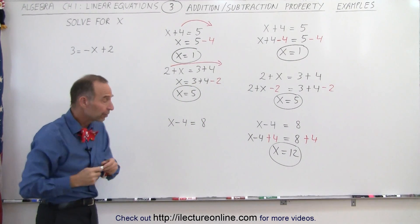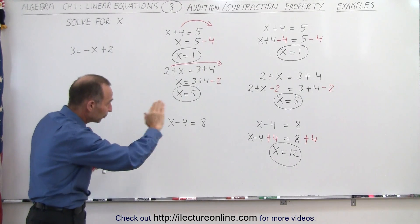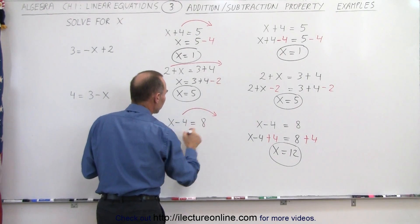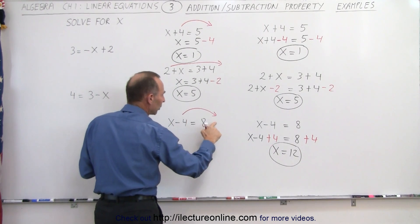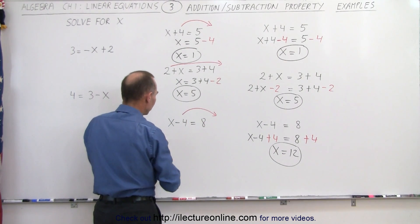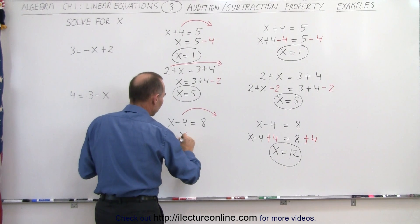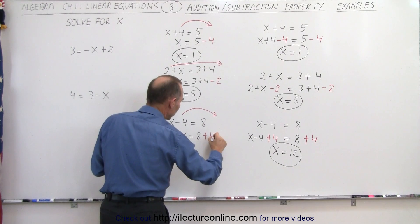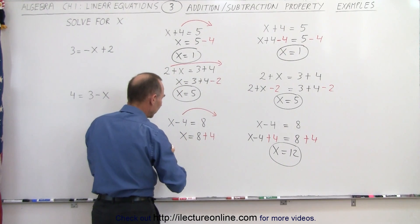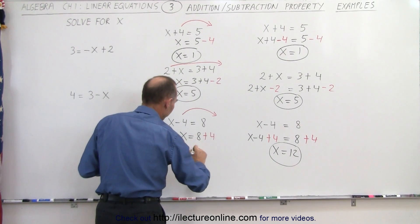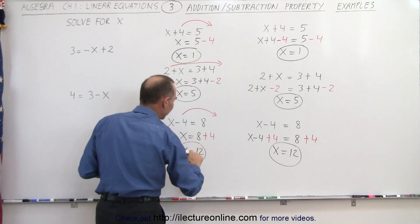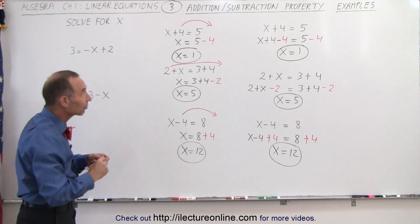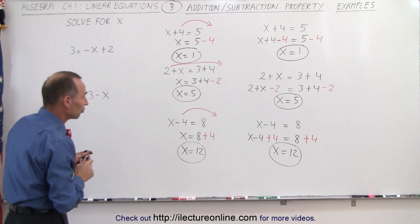Over here we have a negative 4 on the left side. We don't want it there, so we move it to the right side. When we move it to the other side, the sign will change — instead of a negative 4, we end up with a plus 4 on that side. So this becomes x is equal to 8, and now we have a plus 4 because we crossed the equal sign, or x is equal to 12. Notice we end up with the exact same results as when we used the addition or subtraction property.